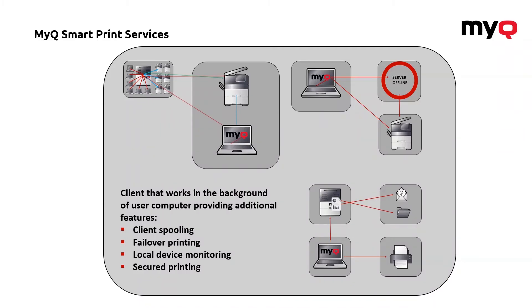We will focus on the SmartPrint Services application, an application which is intended for your end-user computer. After it's been installed on your computer, it can provide additional features like client spooling, the failover print, the local device monitoring, and the secured printing. It can work in both active and passive mode, while the user either has to interact with it or will not see it at all.